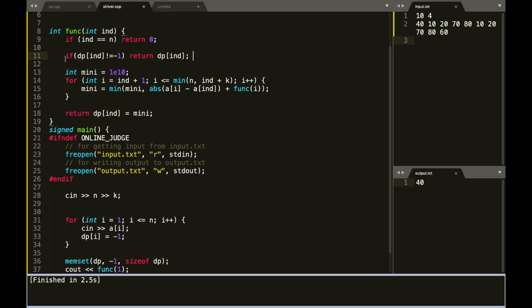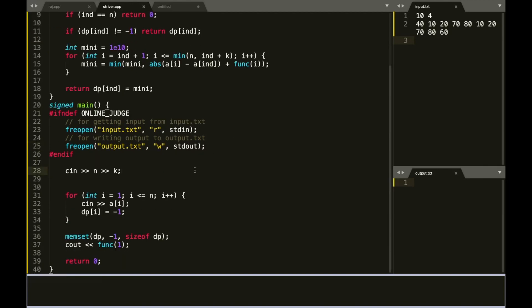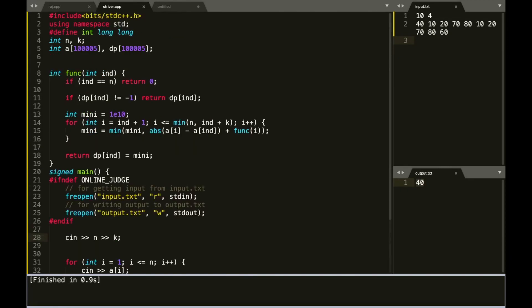And in adding these two lines, we can convert a recursive into a dynamic programming code which fits our time limit. So if we run this code, we will see the answer comes as 40, which was the expected one. So the time complexity is n times k and the space complexity required is O(n).